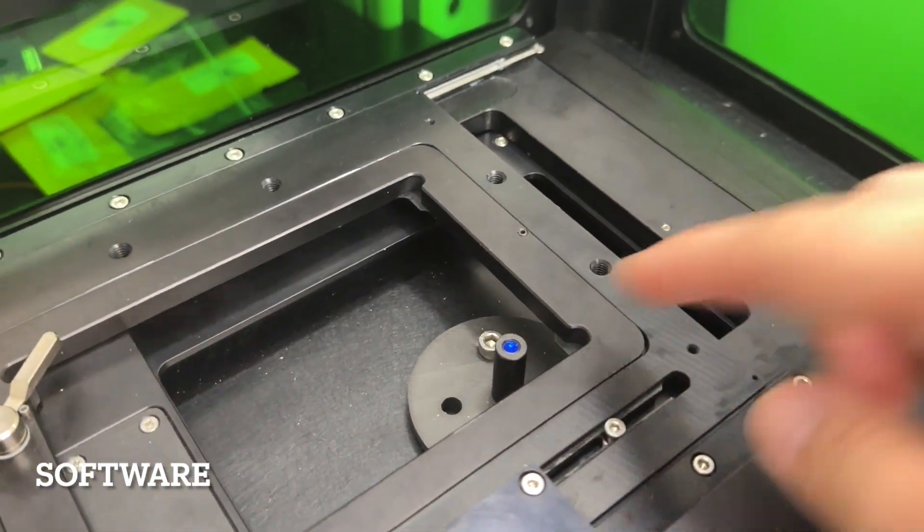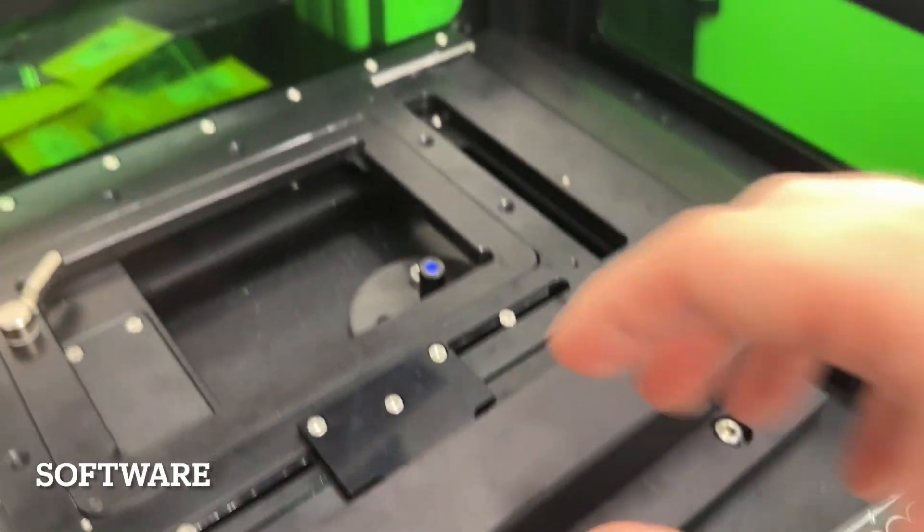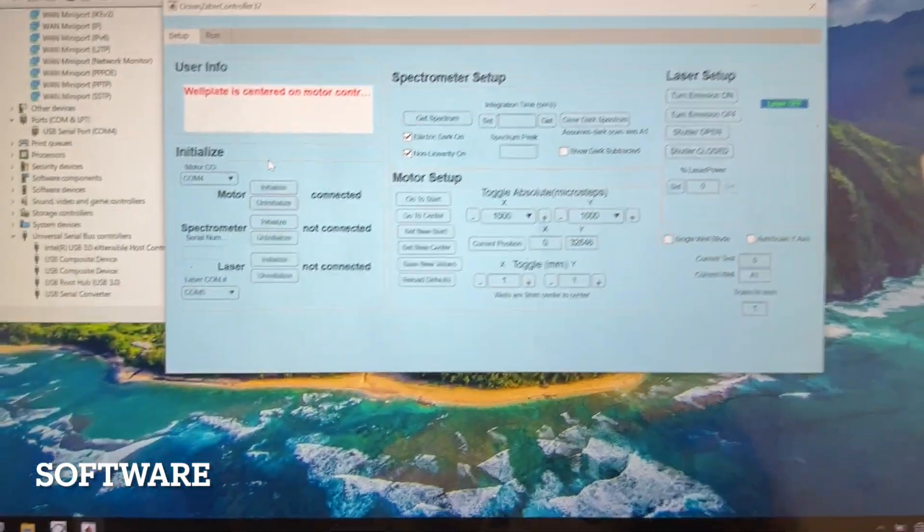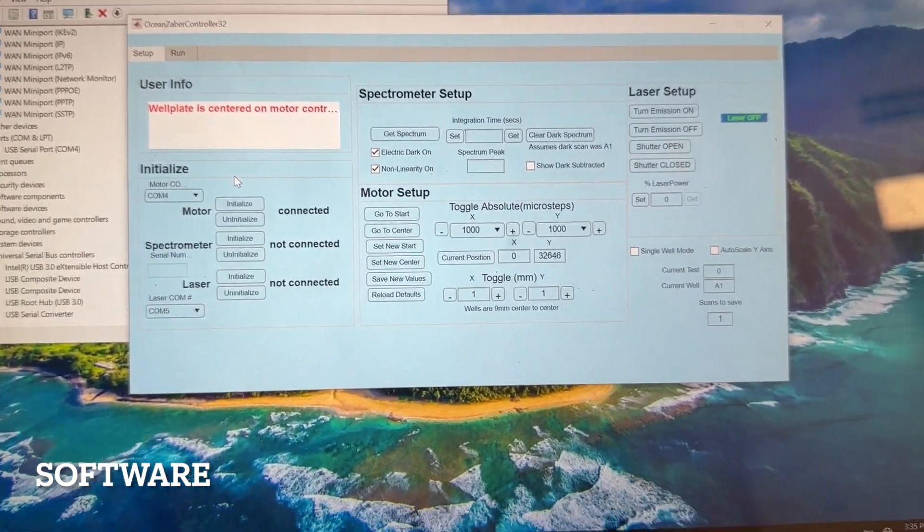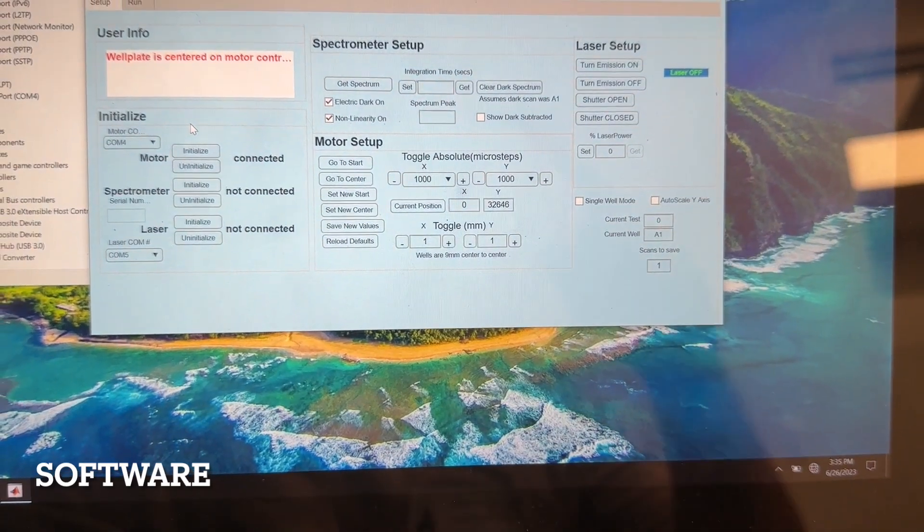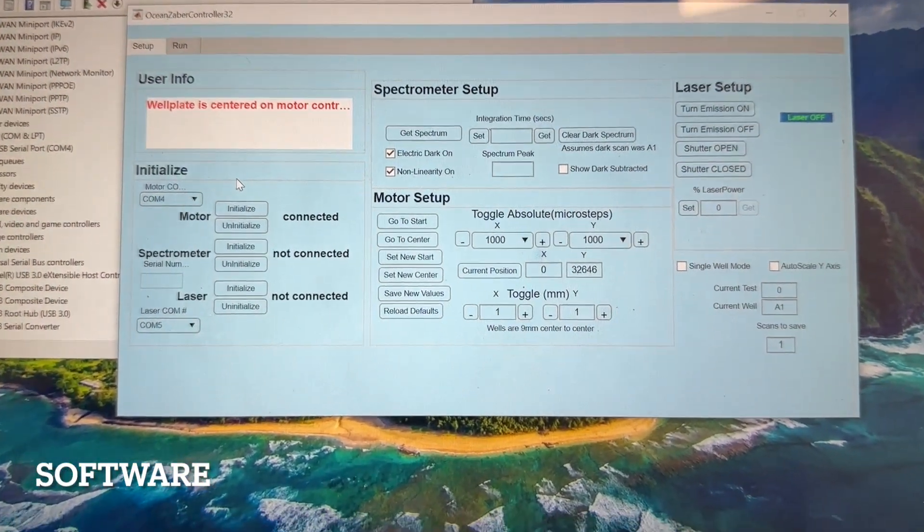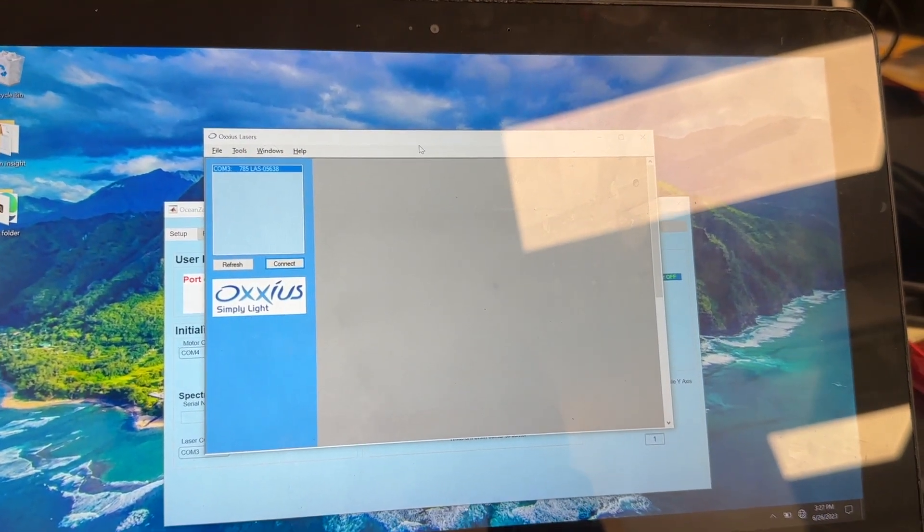The samples will be in this little well plate and then the well plates will be above this laser. The laser will shoot through the sample and the camera will capture the image. And eventually the image will be translated through Fourier transforms to be able to get peaks at certain frequencies depending on what is in that sample.